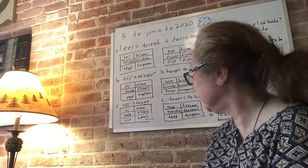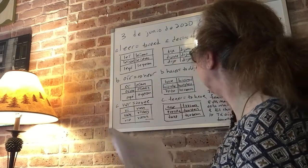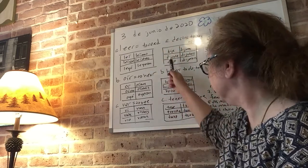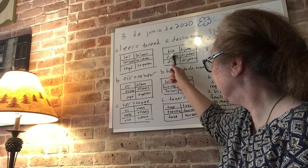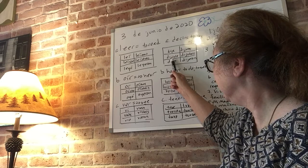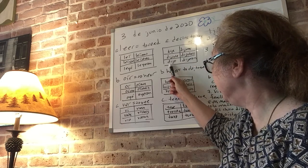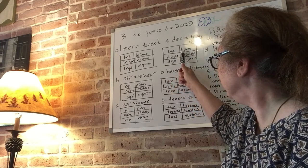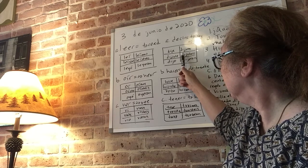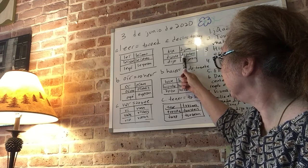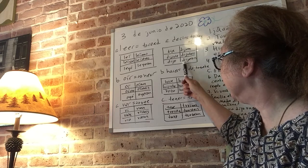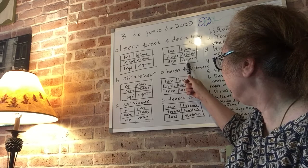Decir means to say or to tell. Yo dije, D-I-J-E, no accent. Tú dijiste, D-I-J-I-S-T-E. Él, ella, usted dijo, D-I-J-O. Nosotros, nosotras dijimos, D-I-J-I-M-O-S. Vosotros, vosotras dijisteis, D-I-J-I-S-T-E-I-S, no accent. Ellos, ellas, ustedes dijeron, D-I-J-E-R-O-N, no accent.